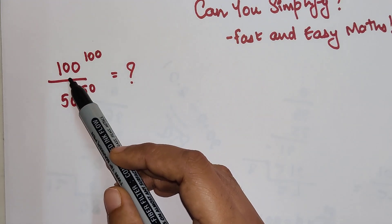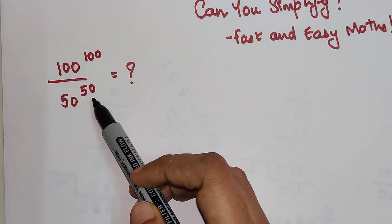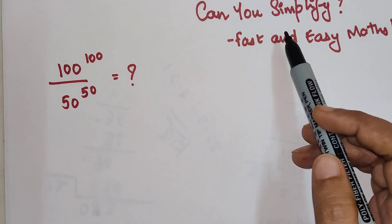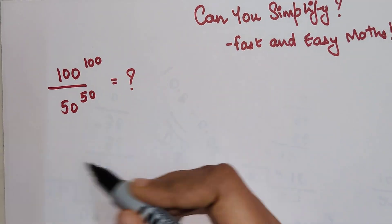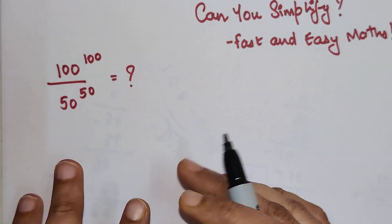The question goes: 100 raised to 100 divided by 50 raised to 50, and we need to simplify this.